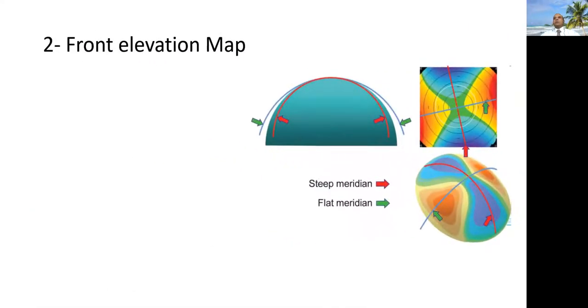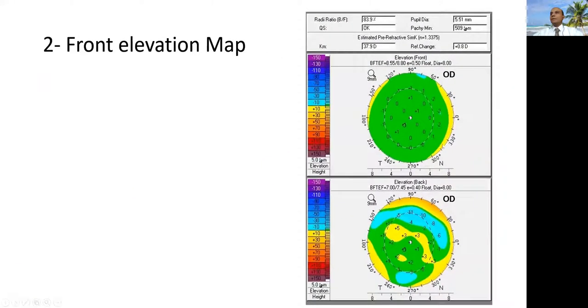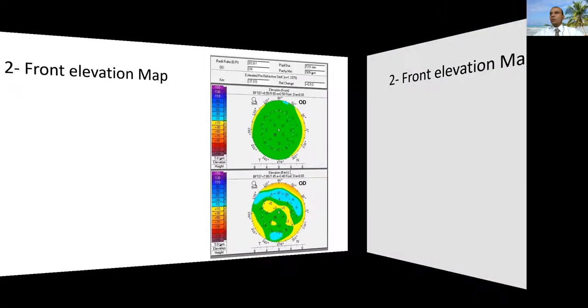The second map is the elevation map. And actually, it's a combined map for the front surface and for the back surface. Actually, there is a surface that is computed by the computer, a virtual surface. Any point above or any point below this virtual surface could be considered flat or steep meridian. Here, the front surface of the cornea, and this is the back, could be studied simultaneously, showing no difference between this cornea and the reference. And this means this is a normal cornea.